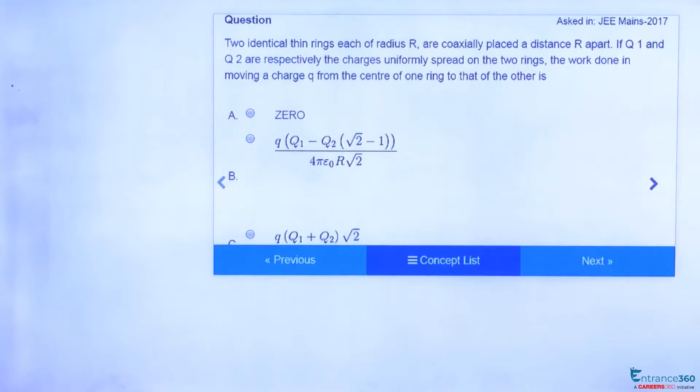Hello students, now we have an interesting question from chapter electrostatics which is asked in JEE Mains 2017. The question says that we have two identical rings of radius R with charges q1 and q2 which are separated by a distance, and their axes coincide. Work done in moving a charge Q from center of one ring to the other.